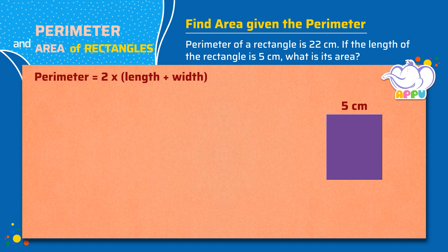So 2 times length plus width equals 22. Length plus width equals 22 by 2. Length plus width equals 11.